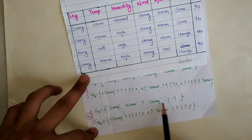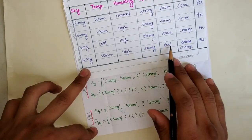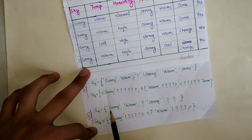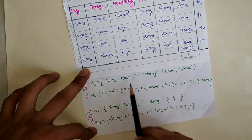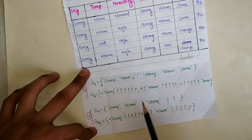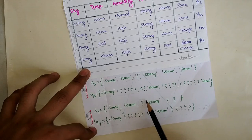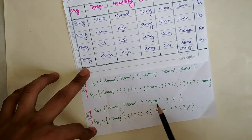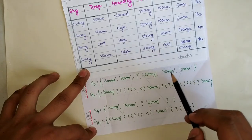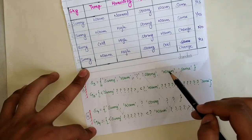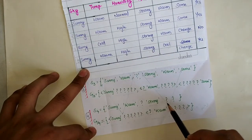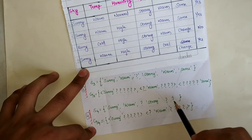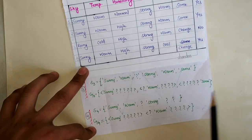The fourth example is positive, so we update the specific hypothesis again by comparing attributes. Sunny matches sunny — write sunny. Warm matches warm — write warm. Question mark stays question mark. Strong matches strong — write strong. Cool vs warm — different, so put a question mark. Change vs same — different, so put a question mark.